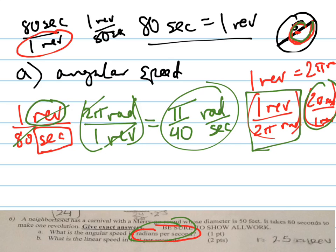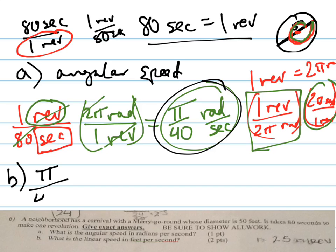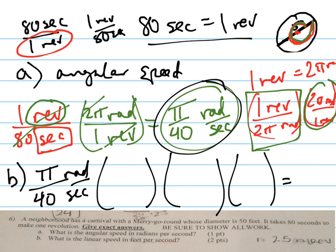The other part, part B, is asking, what's the linear speed in feet per second? Well, we're going to do the same thing. Part B, we're going to do the linear speed. Well, here's the angular speed. So, let's write that out. Radians per second. And I want it to be, here's what I like to do. I like to put a bunch of things here, and then at the end, I'm going to put feet per second. And I want everything to cancel out, except feet and seconds.